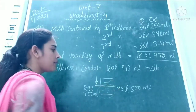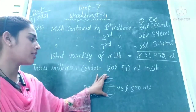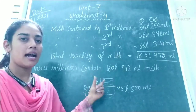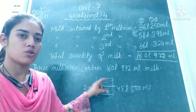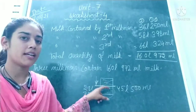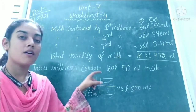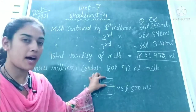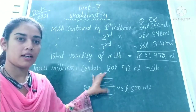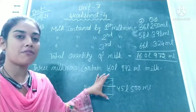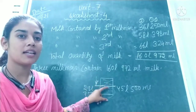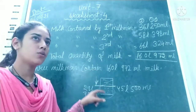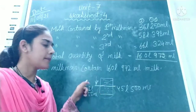We have 45 litres 500 millilitres of water and one part was sold out, so this part is left. It means we have to subtract the sold-out part from the total. If we subtract this part from the total we can get the remaining quantity. Make a statement for this question.